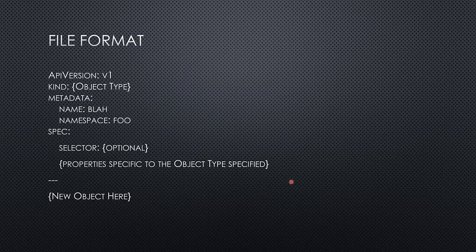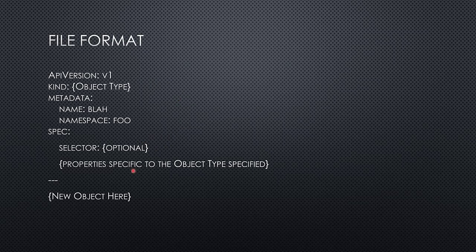The file format is basically just a format for specifying an object. There's always an API version at the top, always a kind telling it what type of object we're doing, always a metadata tag with namespace, name, and any other metadata labels. There's always a spec section, which has a selector — selectors are a way for us to tie in other objects based off of their labels. Below that are properties specific to whatever object type you've specified. There's also a syntax where you put three dashes and then you can put another object right below it.